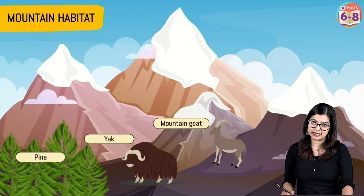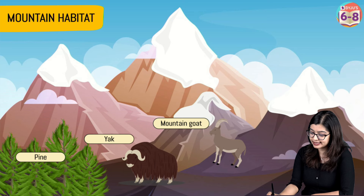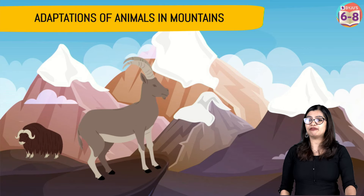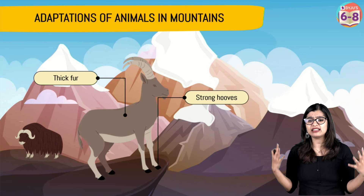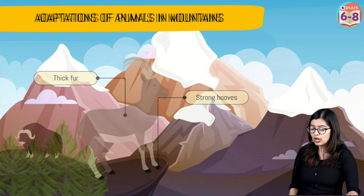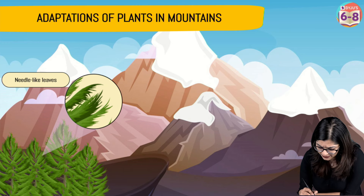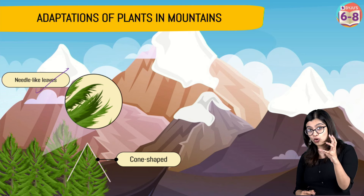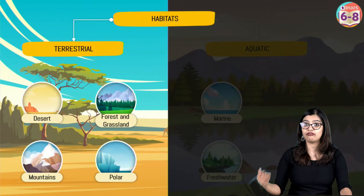Next we have the mountain habitat, found at higher altitudes. During winter the temperatures here become very extreme. Animals like the mountain goat and the yak are found here — both have thick fur, strong hooves, and very thick skin that protects them from the extreme conditions and helps them climb and walk in rocky regions. The plants found here are normally conical-shaped trees — what we often call Christmas trees — with needle-like leaves so that snow and rain can slide off easily, and the cone shape allows snow to fall off and protect the tree.